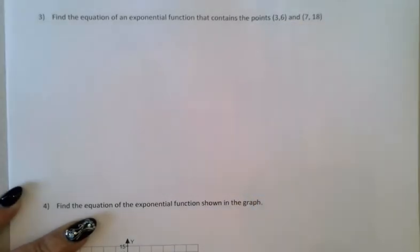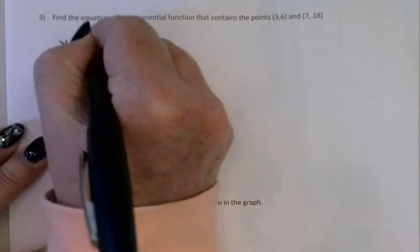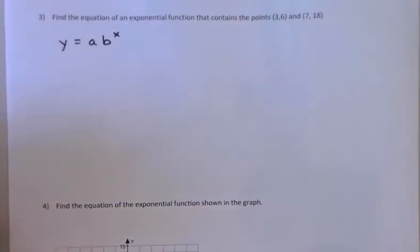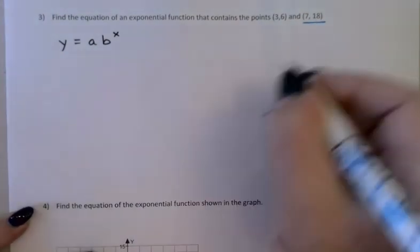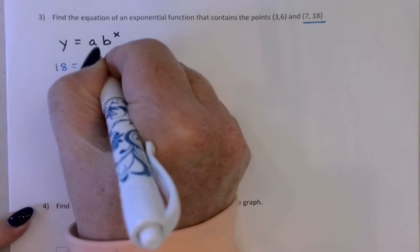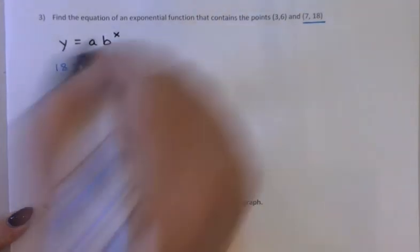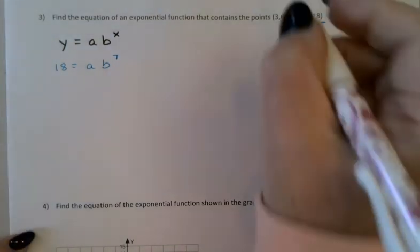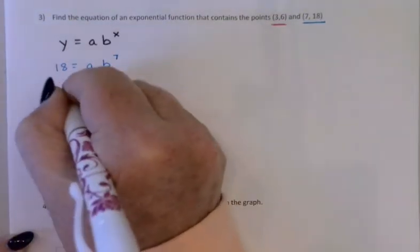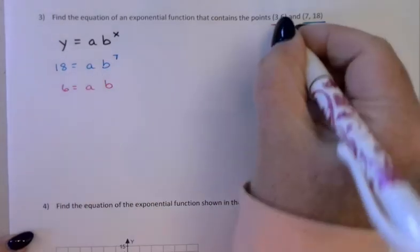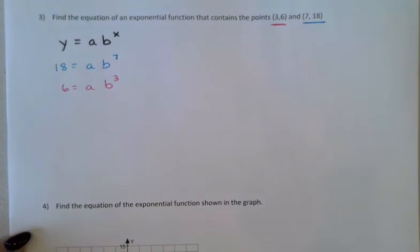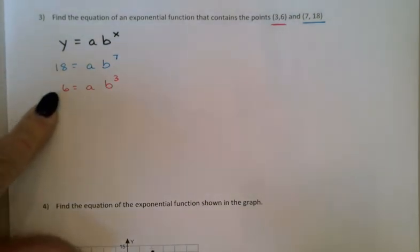So I don't know either a or b to start with. What I'm going to do is just start with my general equation, y equals a, b to the x. And I'm going to plug both points into that equation, one at a time, of course. Let's start with this one. y is 18 when x is 7. Now I'm also going to plug in this one. y is 6 when x is 3. I now have a system of two equations and two unknowns, which I should be able to solve, eventually, for both a and b.